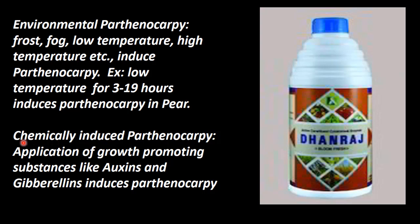There is another method: chemically induced Parthenocarpy, commonly used in home gardens. The application of growth-promoting substances like hormones — auxins, indole acetic acid, indole naphthalene acetic acid, and gibberellins — all induce Parthenocarpy. These are commercially available in India, and by this method seedless fruits can be produced.